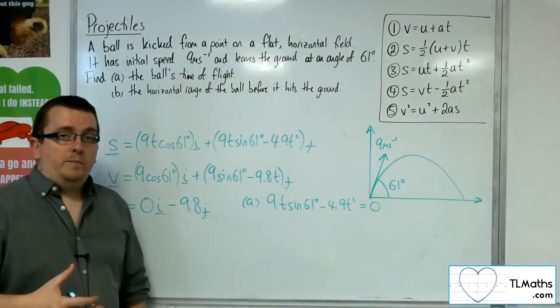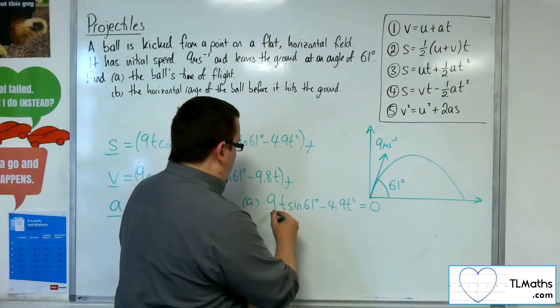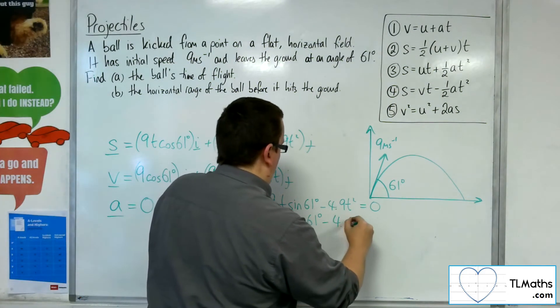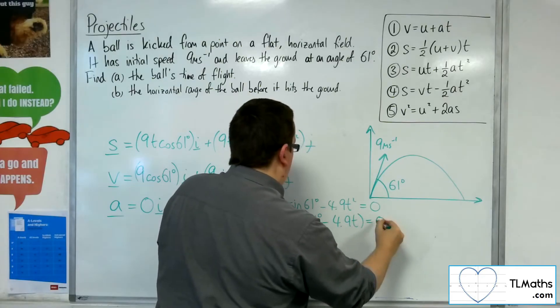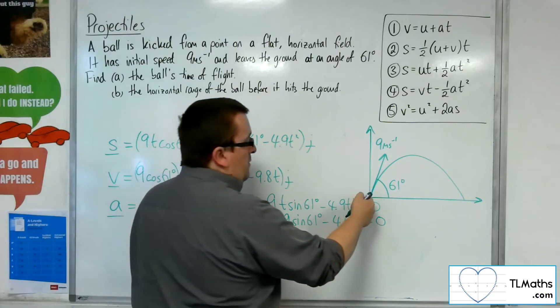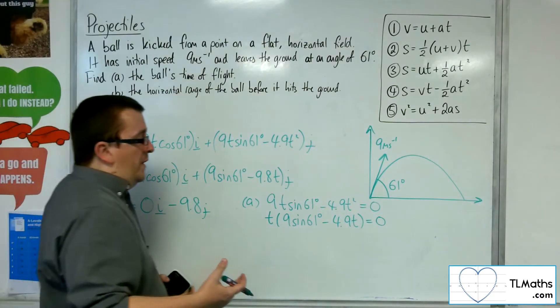I can either pop that into my quadratic solver on my calculator, or I can factor the t out like so. Now, t is 0 as a solution to this equation, but that would be representing when I'm starting off anyway. So I don't want to find that one.